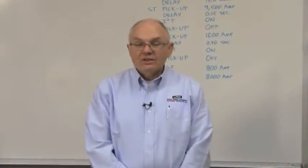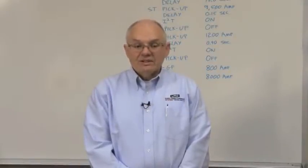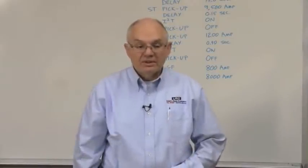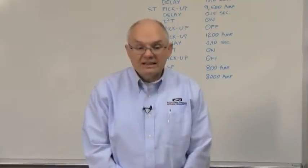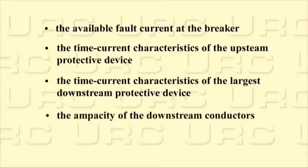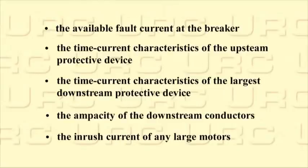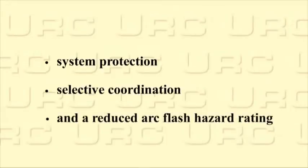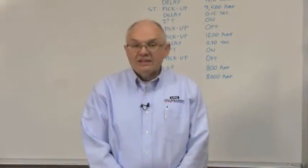Before we get started, I just wanted to go over two commonly asked questions. The first question is: how do I know what the settings should be for the ACPro? The best way to determine the settings is through a coordination study. The coordination study determines the available fault current at the breaker, the time current characteristics of the upstream protective device, the time current characteristics of the largest downstream device, the ampacity of the downstream conductors, and the inrush current of any large motors. With all this information, the settings can be determined that will provide system protection, selective coordination, and also reduced arc flash hazard rating.